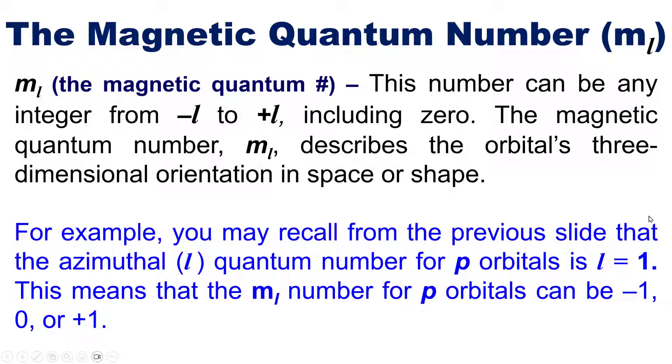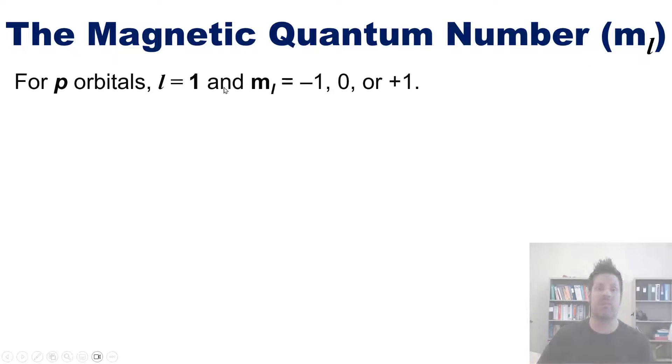For example, you may recall from the previous slide that the azimuthal quantum number l for p orbitals is l equals 1. This means that the m sub l number for p orbitals can be negative 1, 0, or positive 1.